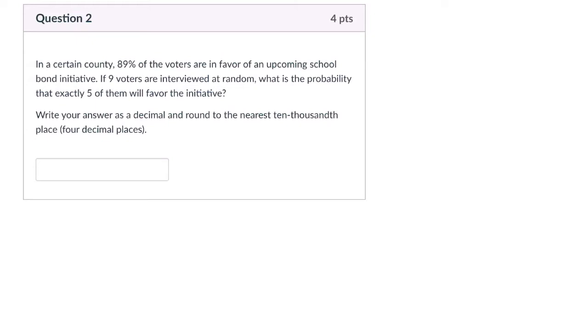Okay, so we're told here that in a certain county, 89% of the voters are in favor of an upcoming school initiative, and then we're asked if nine of the voters are interviewed, what is the probability that exactly five of them will favor the initiative?